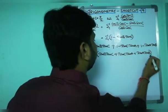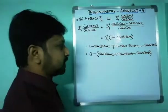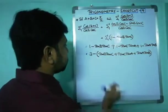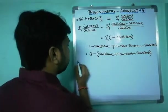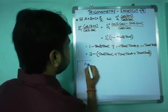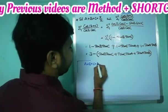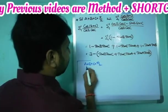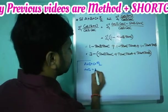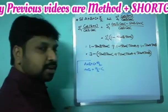Now we need to simplify this quantity. To find its value, note that a plus b plus c equals pi/2 is given. From this, a plus b equals pi/2 minus c.